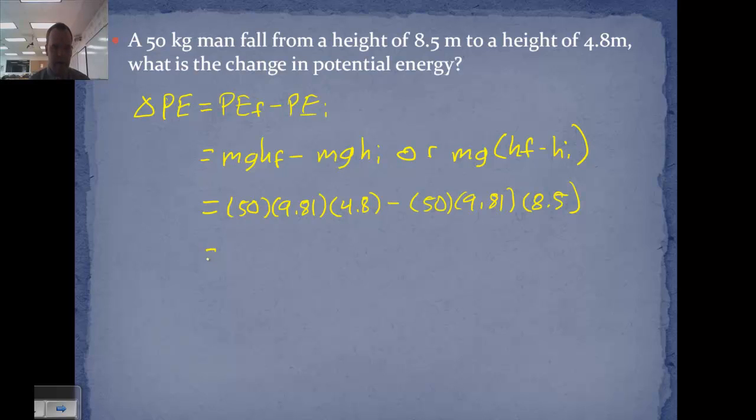So 50 times 9.81 times 4.8 minus 50 times 9.81 times 8.5, so we get 2,354.2 minus 4,169.25, which comes out to a change in potential energy of negative 1,814.85 joules.